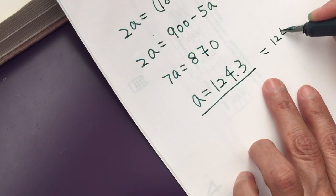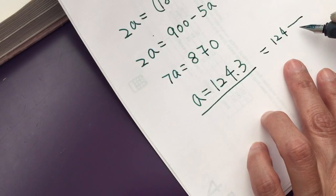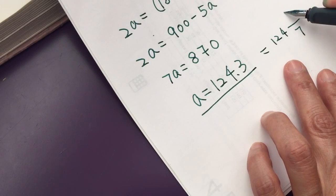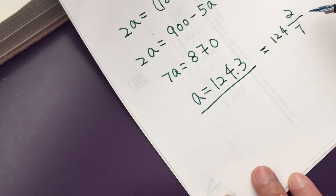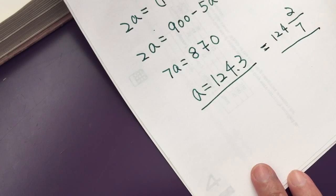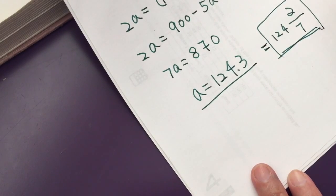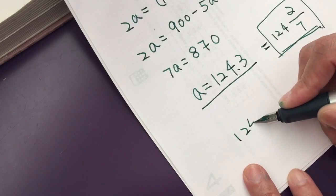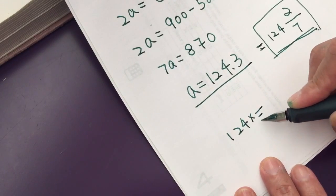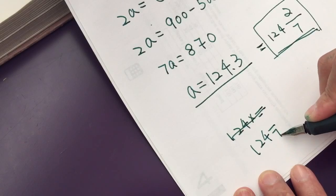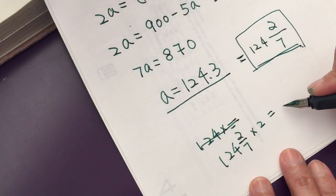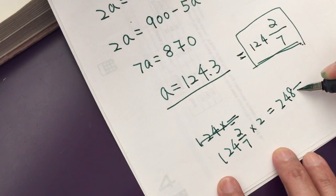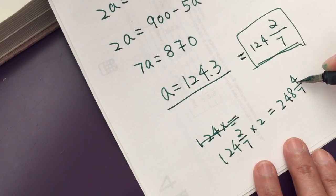It's better we make it into a fraction, right? So this is the measure we calculated. And now we go back twice, the measure of this angle is 124 and 2/7 times 2 equals 248 and 4/7, right?